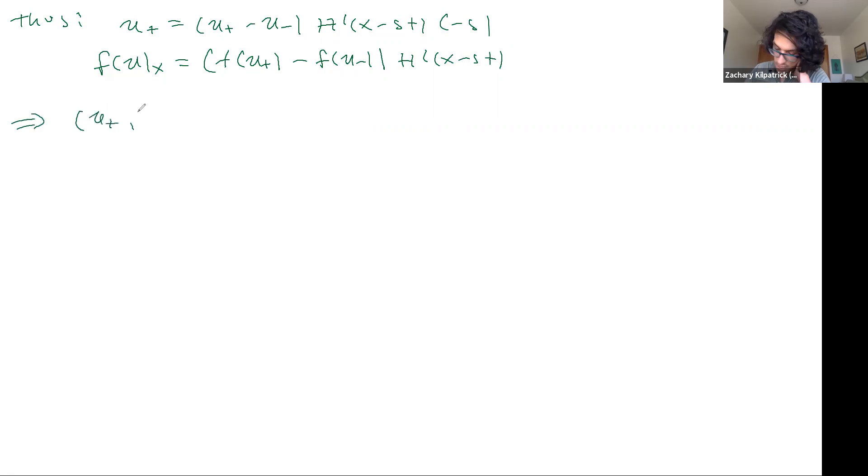my distributional equation now, I'll write it in its original form, F of U sub X phi. I can write this as the following.